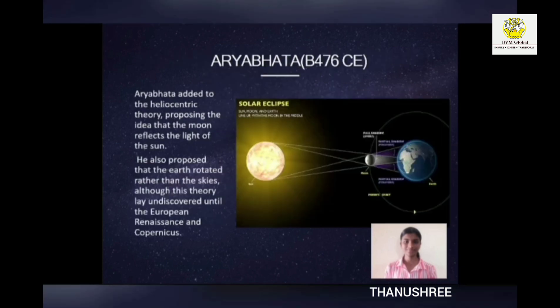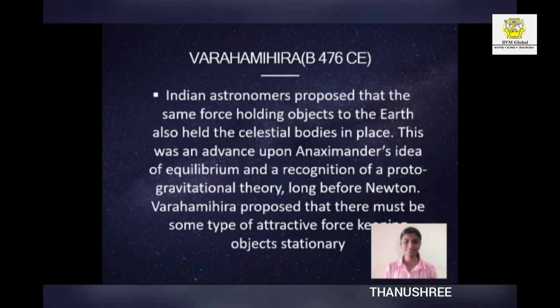Aryabhata added to the heliocentric theory, proposing the idea that the moon reflects the light of the sun. Varahamihira, an ancient Indian astronomer, proposed that the same force holding objects to the Earth also held the celestial bodies in place. This was an advance upon earlier ideas of equilibrium and the development of a proto-gravitational theory, long before Newton. Varahamihira proposed that there must be some type of attractive force keeping objects stationary.